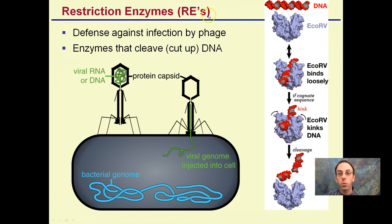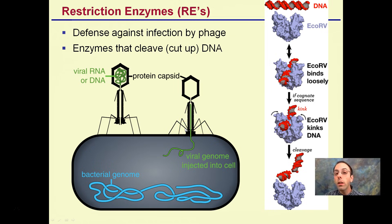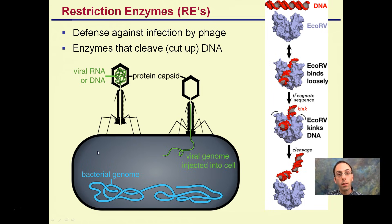Restriction enzymes are actually used to defend against infectious agents like viruses. Enzymes that cleave or cut up DNA are important. If foreign DNA gets put into a cell — for example, a viral genome being injected — cells naturally generate these restriction enzymes to recognize it as foreign DNA and chop it up before it can reroute all the machinery of that cell. In the natural sense, they are not completely man-made and are used to chop up invading DNA.